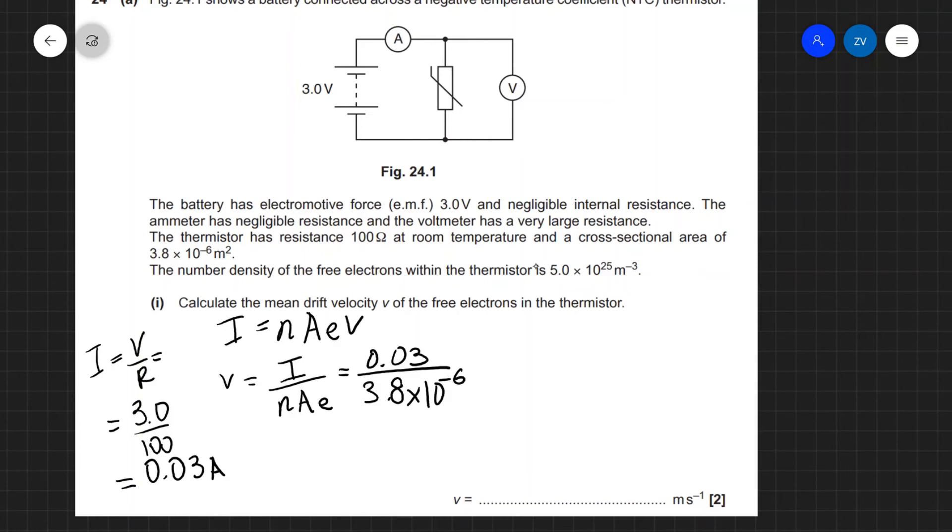Okay then we need to multiply by the number density as well so this was our area multiplying by n which is 5.0 times 10 to the power of 25 and by the electron charge which is 1.6 times 10 to the power of minus 19.